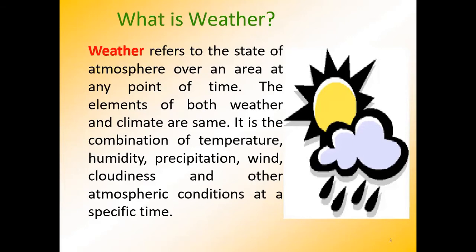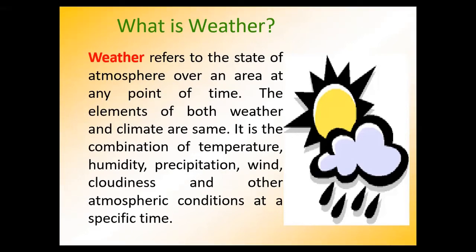Both weather and climate share the same elements — temperature, humidity, precipitation, wind, cloudiness and all other atmospheric conditions. But weather and climate are two different things. Climate is the sum total of weather conditions, whereas weather refers to the state of atmosphere over an area at any point of time. Weather is a variable entity; it varies slowly but can also change very quickly, even violently within just a few hours.